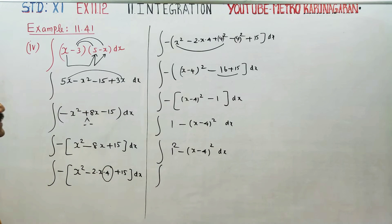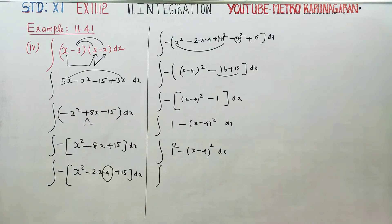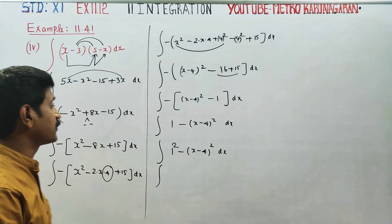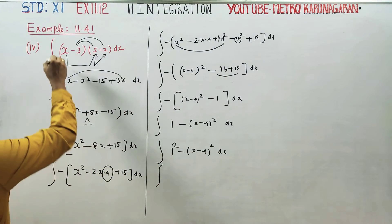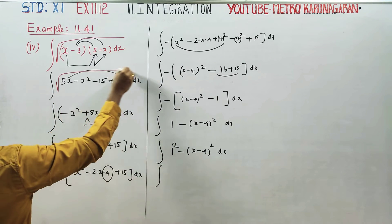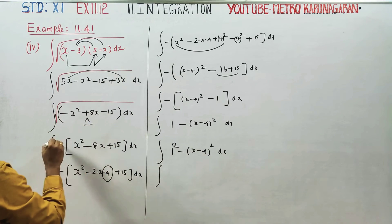This simplifies to the integration of 1 squared minus (x minus 4) whole squared dx. Now, what formula matches here? The formula is for the square root of a squared minus x squared — this is the main formula we need.